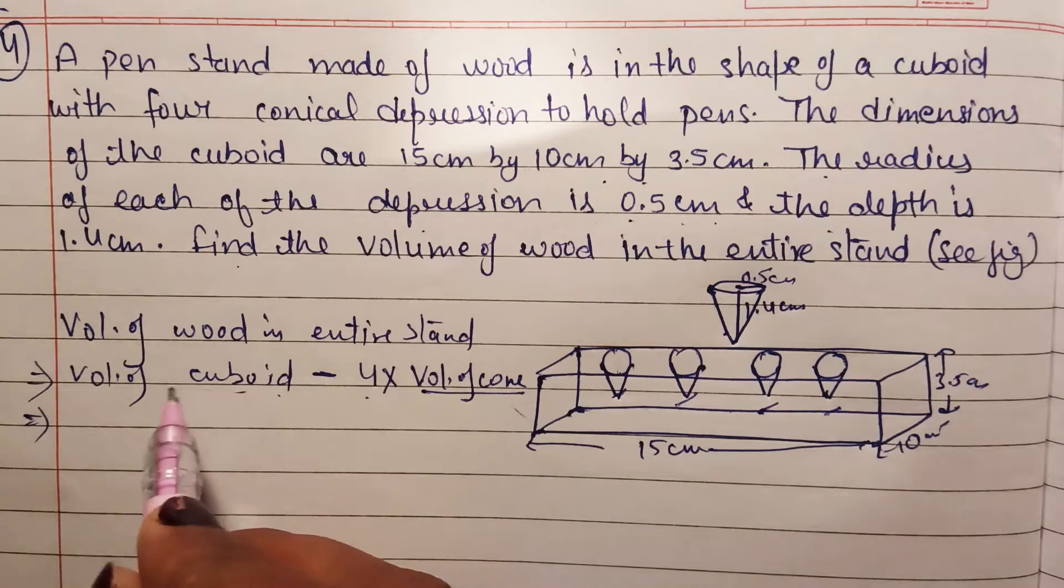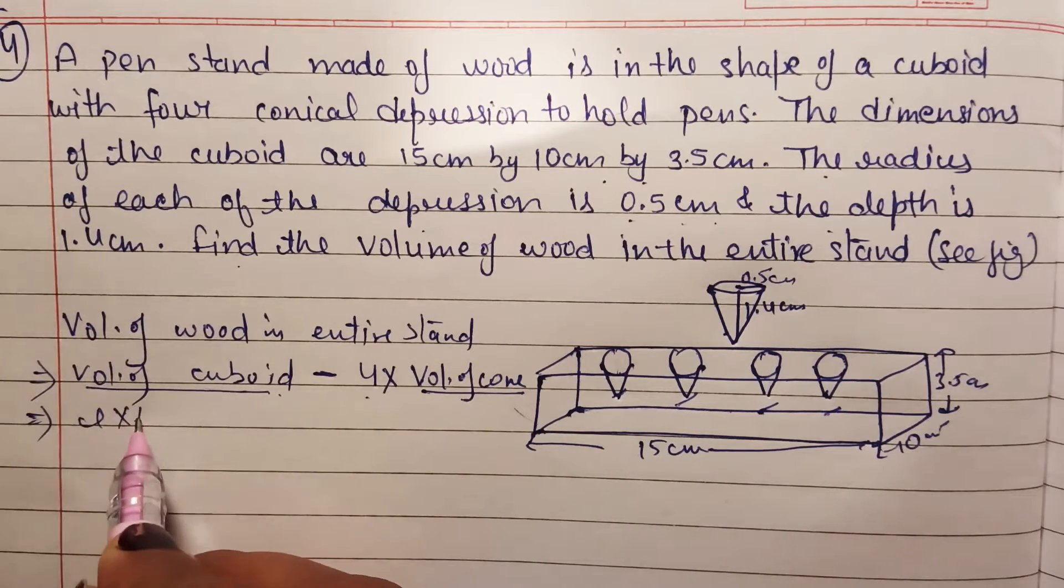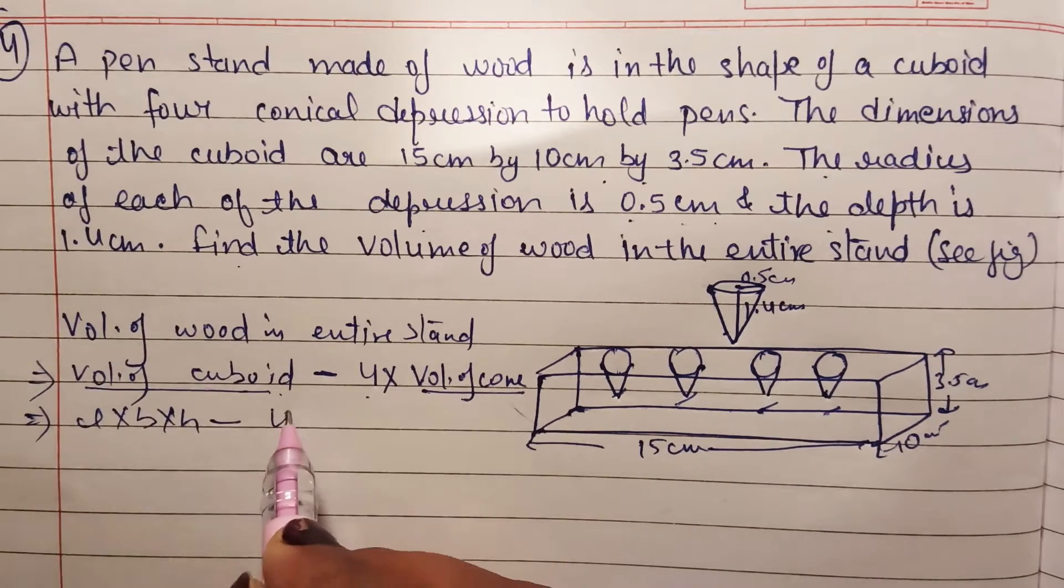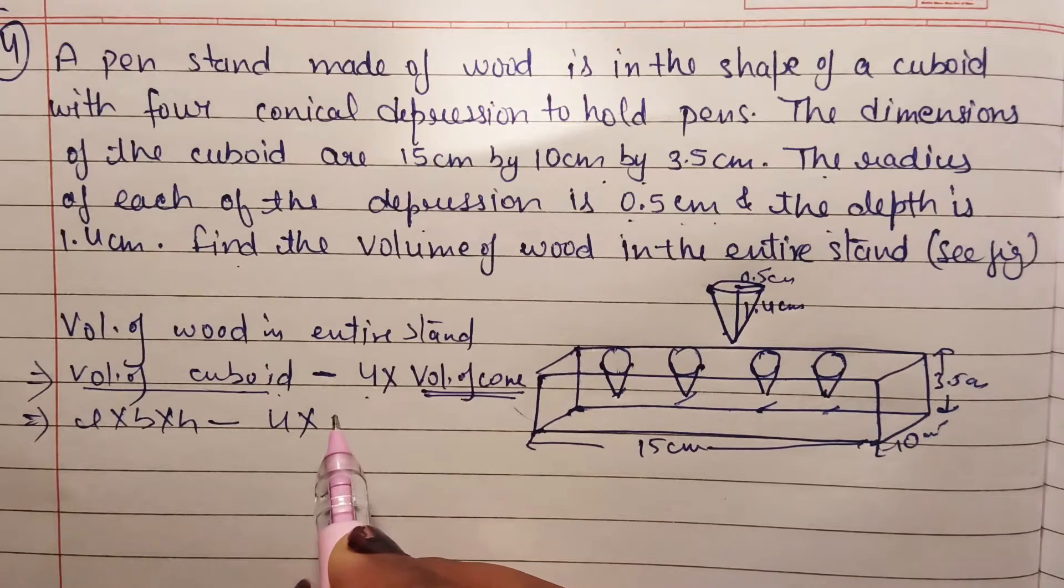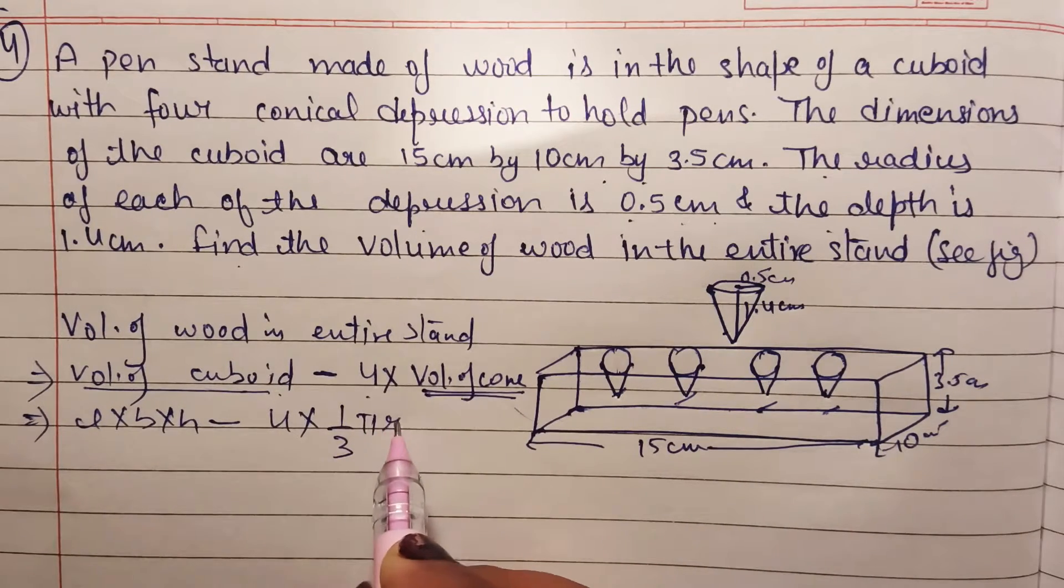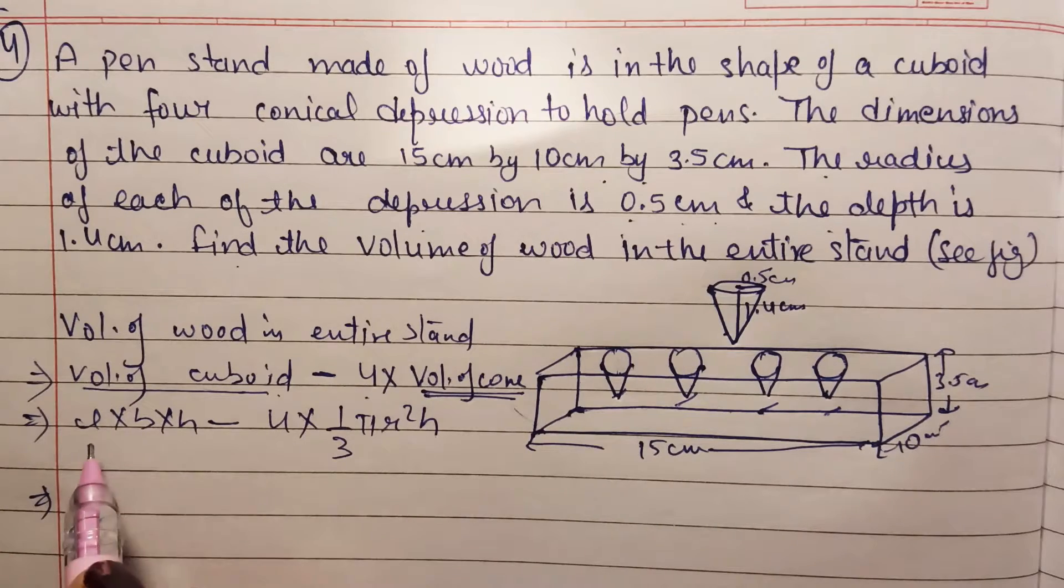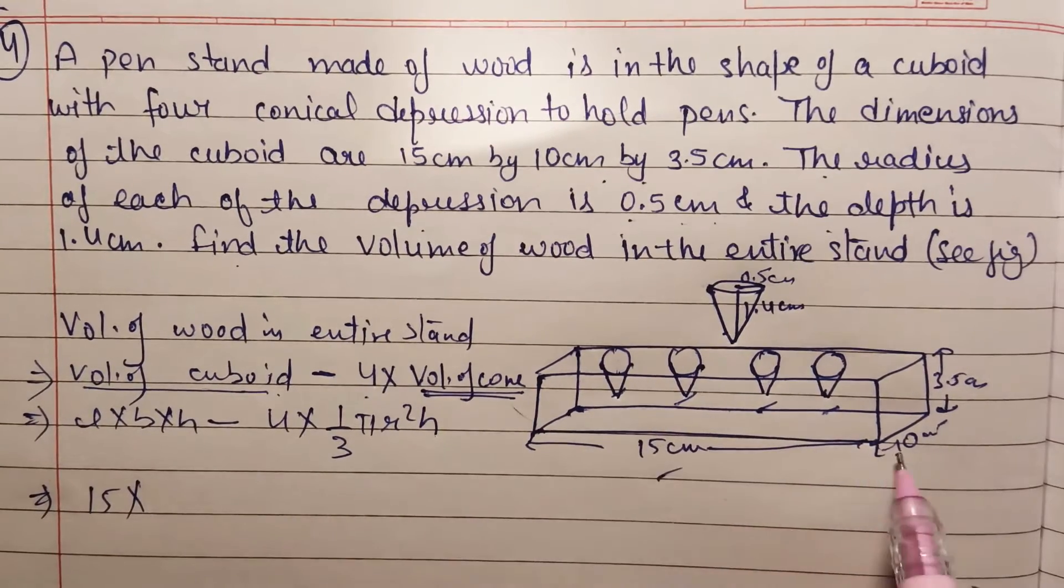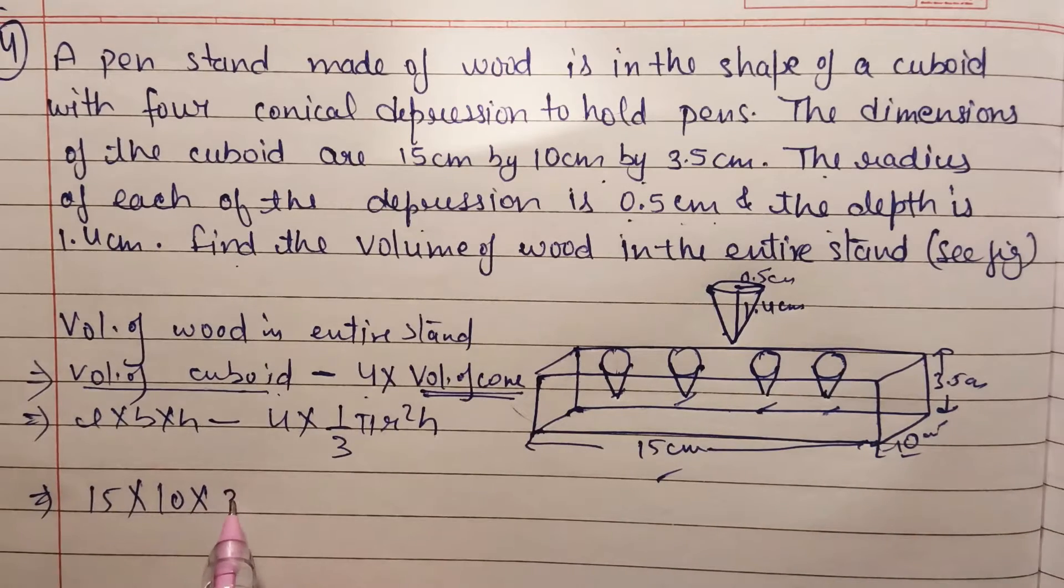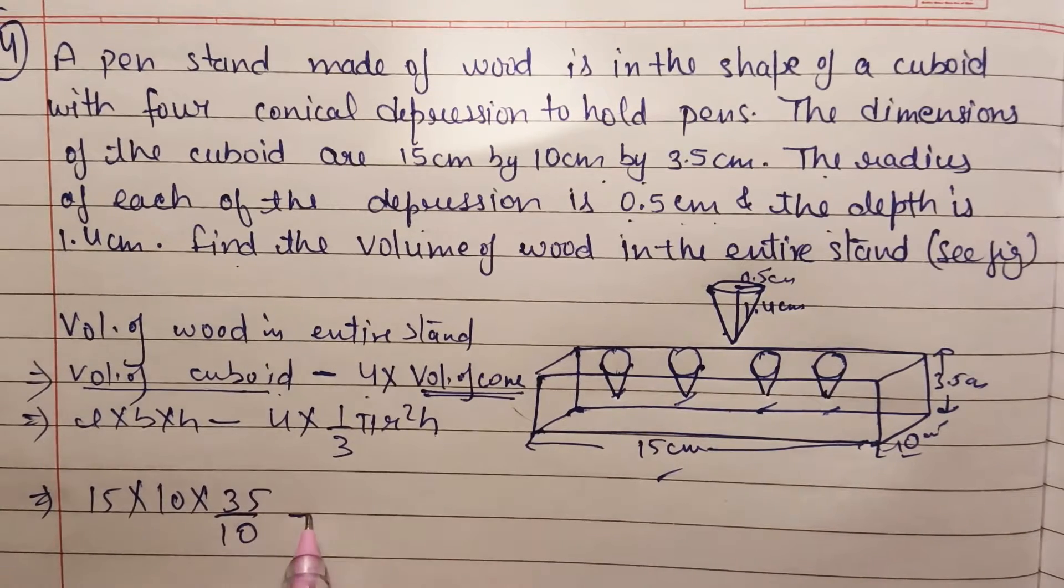Now put the formulas here. Volume of cuboid is length into breadth into height, minus four into volume of cone, which is one by three pi r square h. Now put the values here. Length is 15, breadth is 10, height is 3.5, I can write this as 35 by 10.